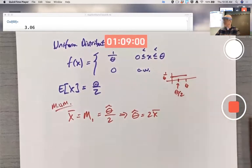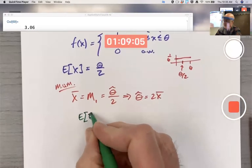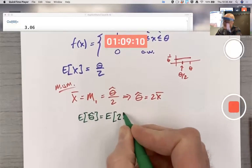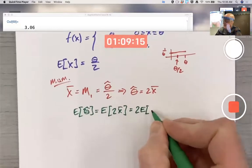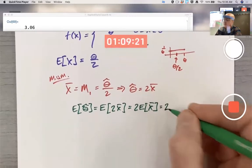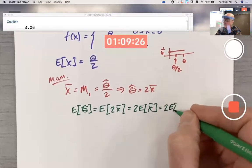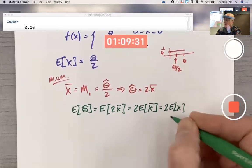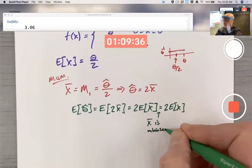Is it unbiased? What's the expected value of theta hat? It is easy to figure that out in this case because theta has a linear function of X bar. I can use the linearity of the expected value operator. And remember the expected value of X bar does equal the expected value of X because X bar is unbiased.